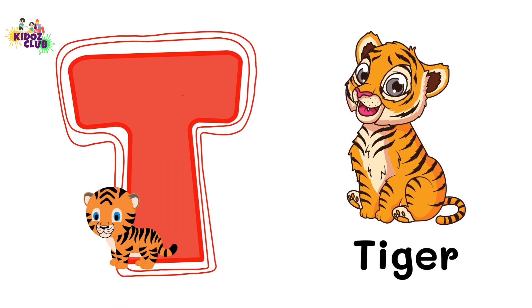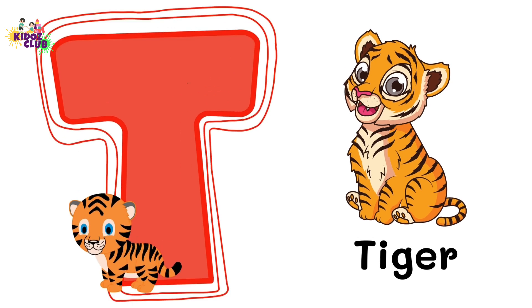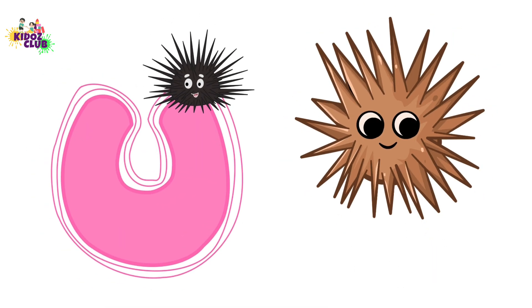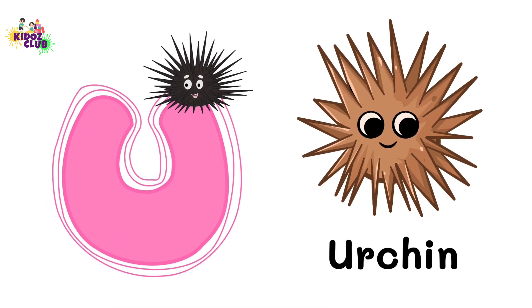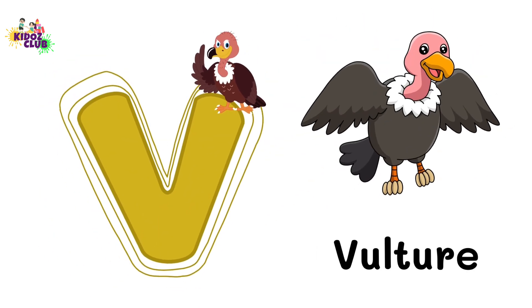T T for Tiger. U U for Archeen. V V for Belcher.